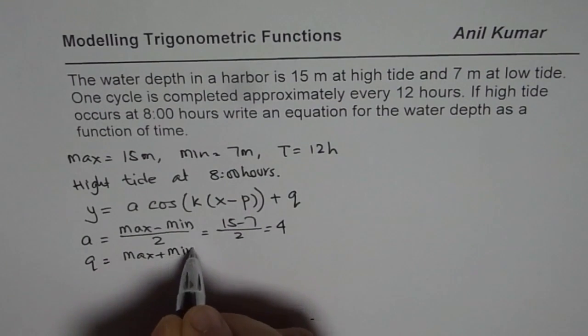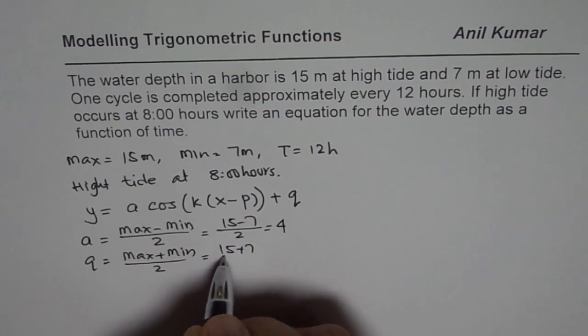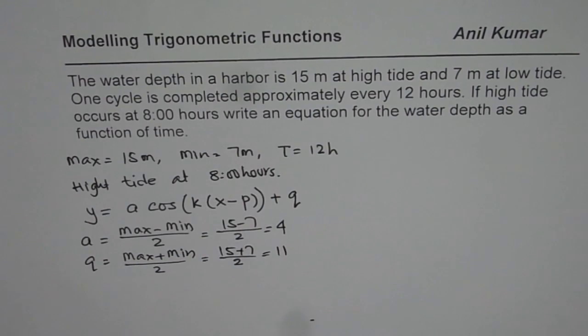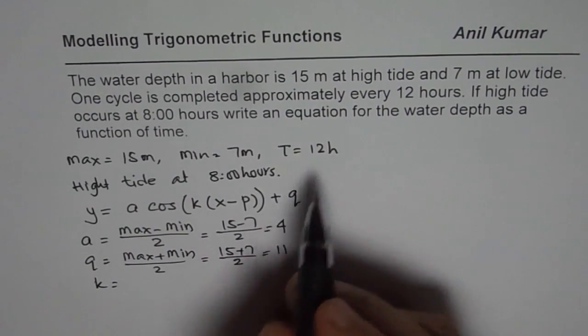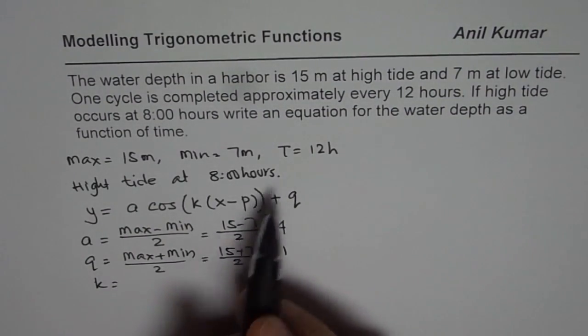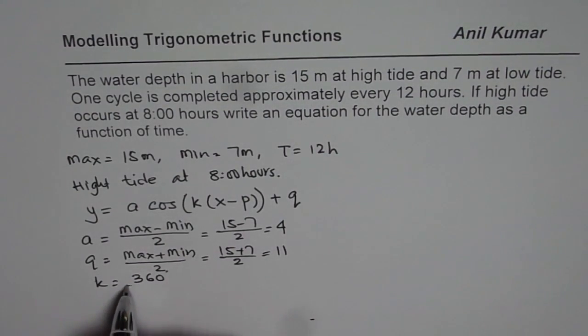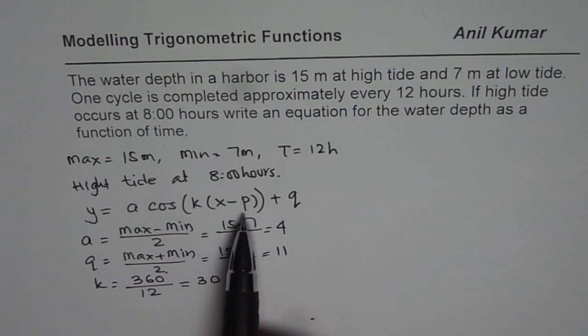The axis q will be average value, that is maximum plus minimum divided by 2, which is 15 plus 7 which is 22, divide by 2 gives us 11. And the k value we get from the time period which is 12 hours. So 360 degrees, we are working in degrees, divided by 12, which is 30. So k value is 30 for us. We got all the values. The only value which we need is p.